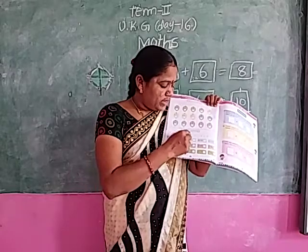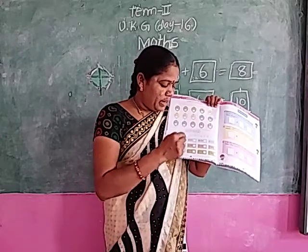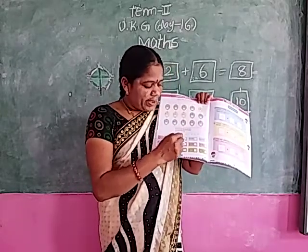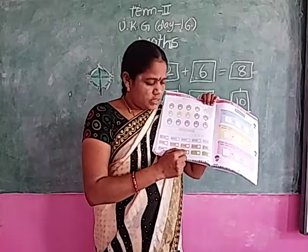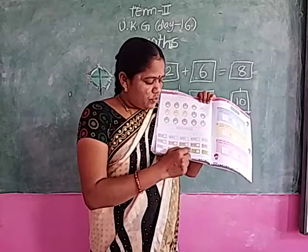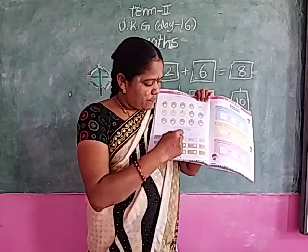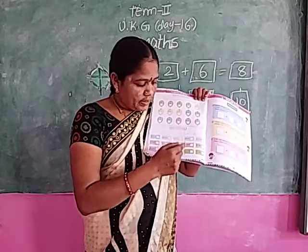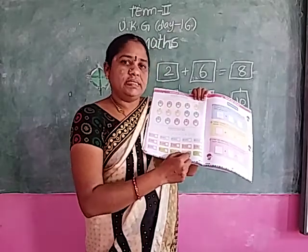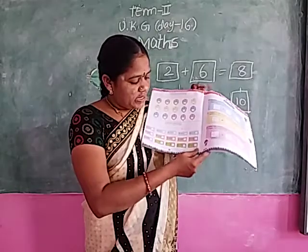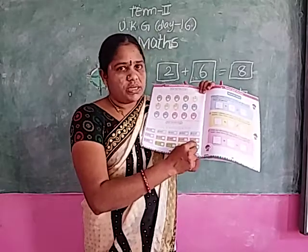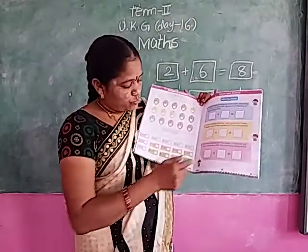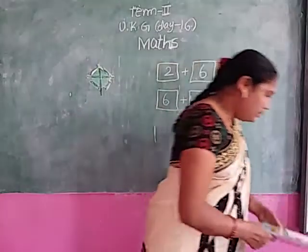4 plus 1 — circle the 4 on the number line, move forward 1 time. Answer: 5. 4 plus 1 equals 5. Next: 5 plus 1 — circle the 5 on the number line, move forward 1 time. What is the answer? 6. Next: 7 plus 0 — write the answer: 7. Do this work at home.